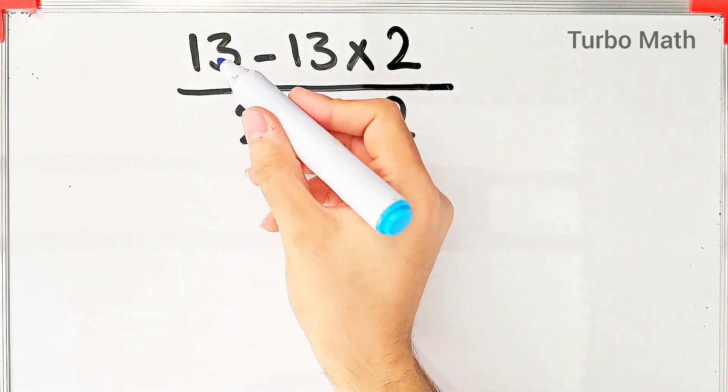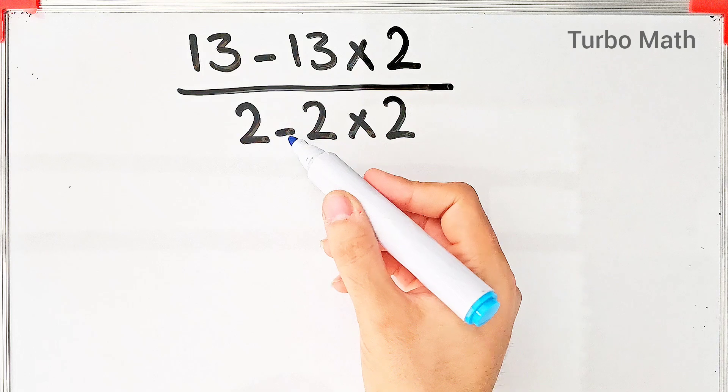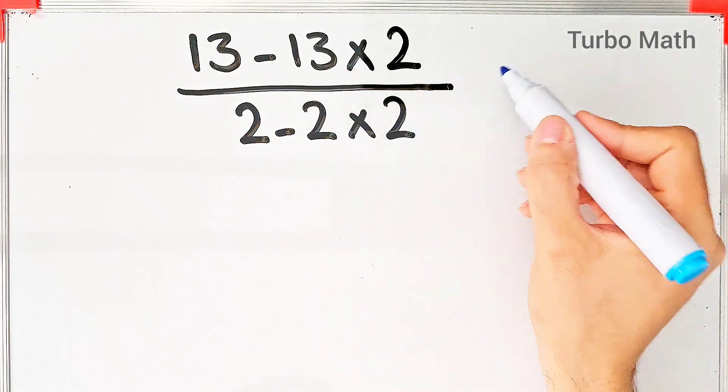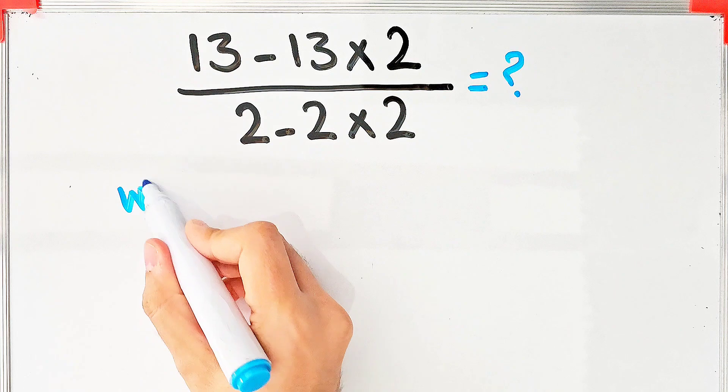Hi friends, welcome to Turbo Math channel. The question is: (13 - 13×2) ÷ (2 - 2×2). What is the answer to this question? In the wrong way of solving this question, some people